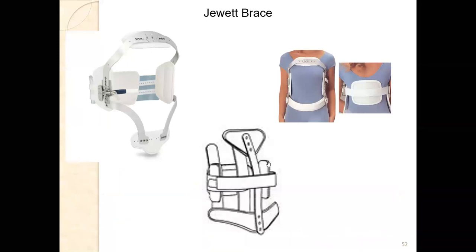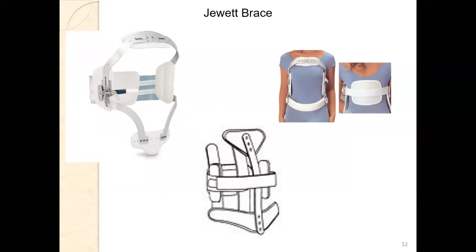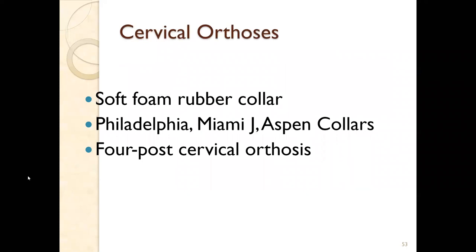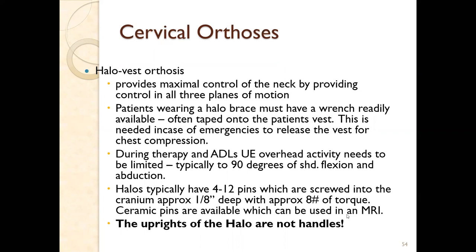A Jewett brace takes the CASH brace concept and adds more support — it's beefier and easier to customize with various plugs and buttons. It provides more support to the thoracic region than the CASH brace. For cervical orthoses, options range from soft foam rubber collars to Philadelphia and Miami J collars, Aspens, four-post cervical orthoses, and halos.